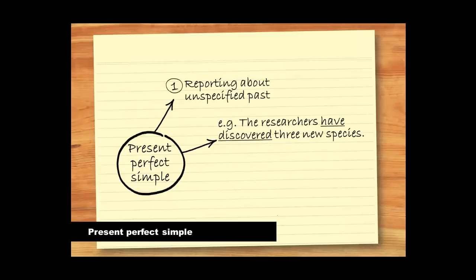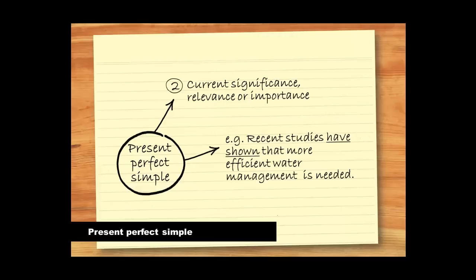Firstly, use the present perfect simple when you're reporting what you or others have done at an unspecified time in the past. We can also use it to show something has current significance, relevance or importance.